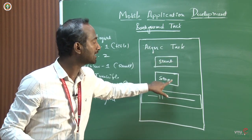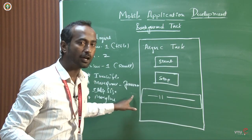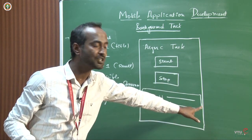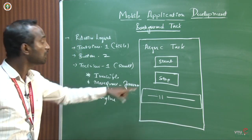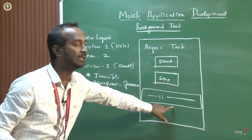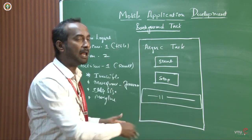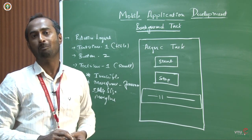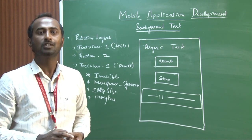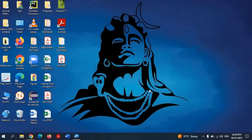This is a simple demonstration: even if you are doing anything else on the application, this background task will execute in the background. The title, start button, and stop button — when the user clicks start, the background asynchronous task demonstration will float as marquee text. When the user clicks stop, it disappears. Let's start the demonstration — I am going to create a simple application in Android Studio.